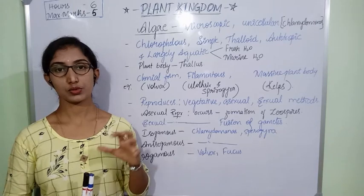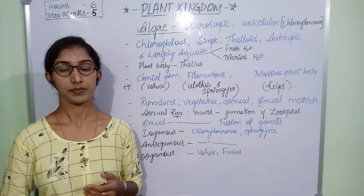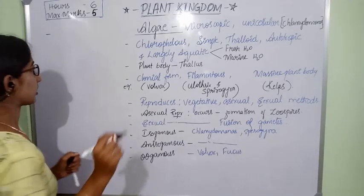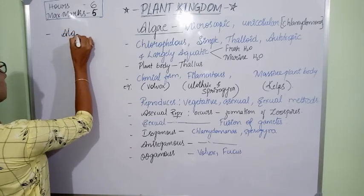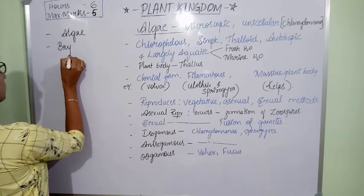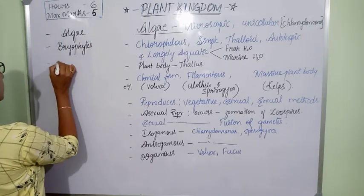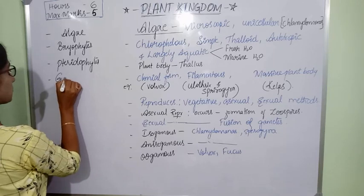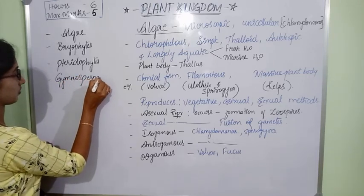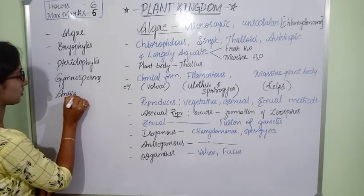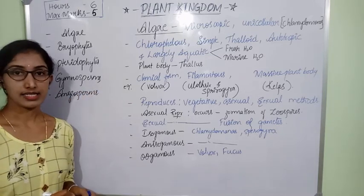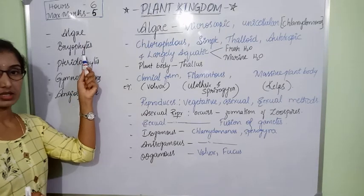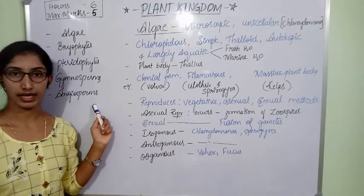In this class we shall know into how many character categories the plant kingdom is divided. The plants are classified into different groups such as algae, bryophytes, pteridophytes, gymnosperms, and angiosperms.